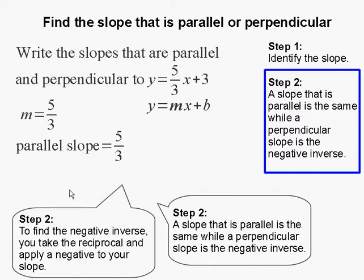And the slope that is perpendicular is the negative inverse. Now the negative inverse is the reciprocal of the slope. So 5 over 3, the reciprocal is 3 over 5. And you apply the negative to the parallel slope. So 3 over 5 is then negative 3 over 5. And that is the perpendicular slope.